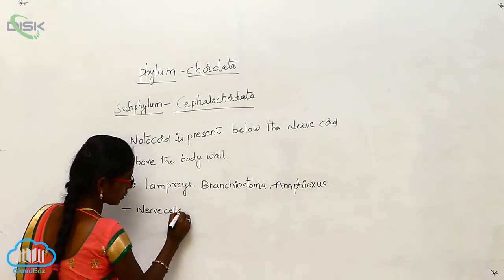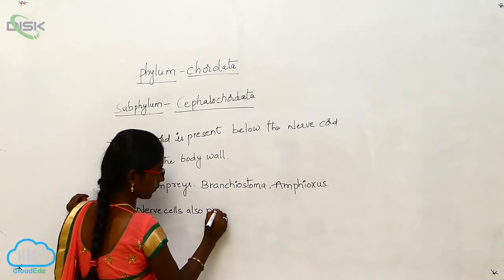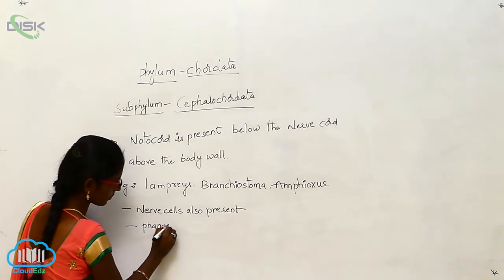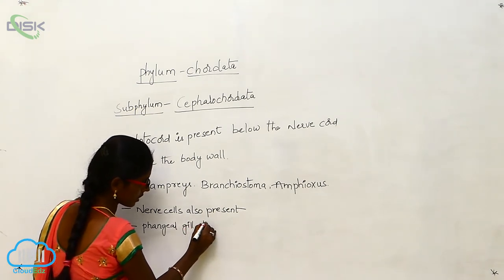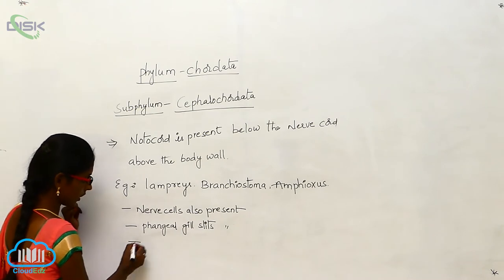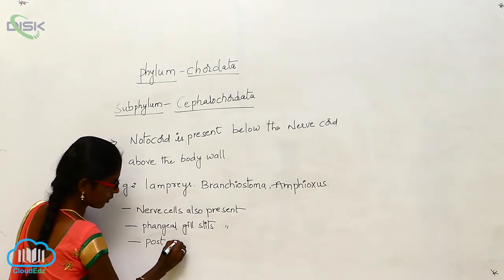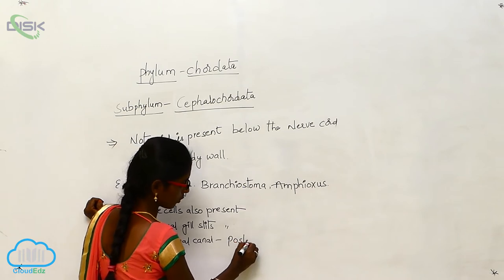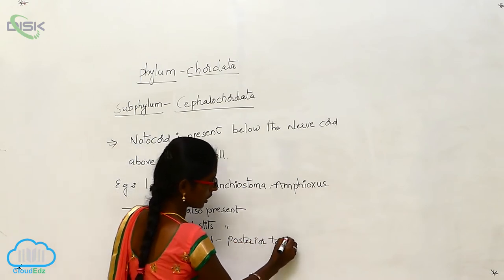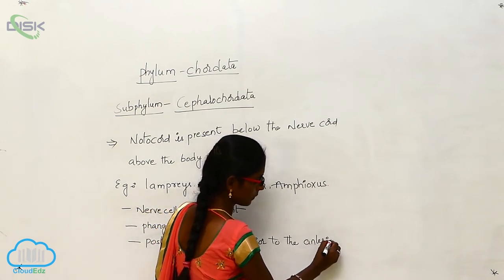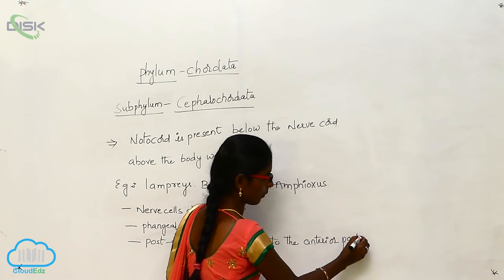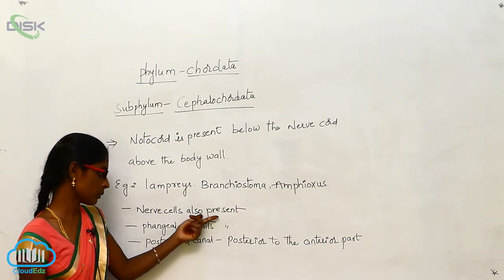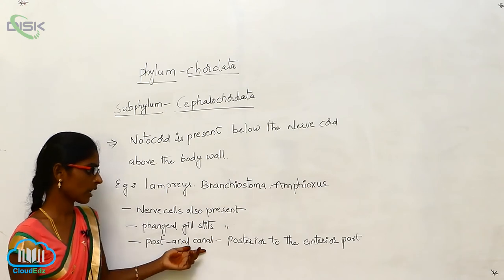In Cephalocardata, nerve cells are also present, and pharyngeal gill slits are also present. Additionally, the postanal canal is extended from the posterior to the anterior part of the organism.